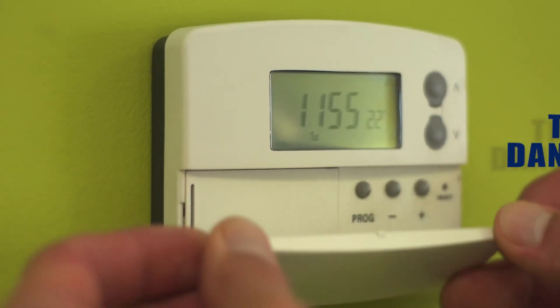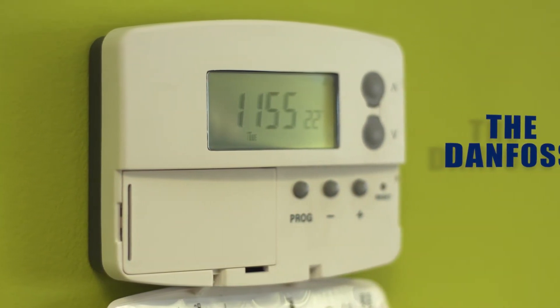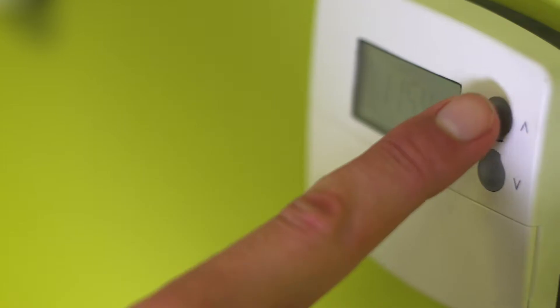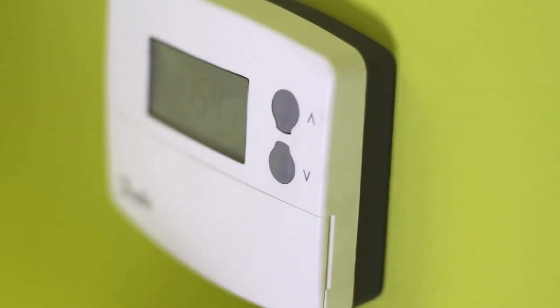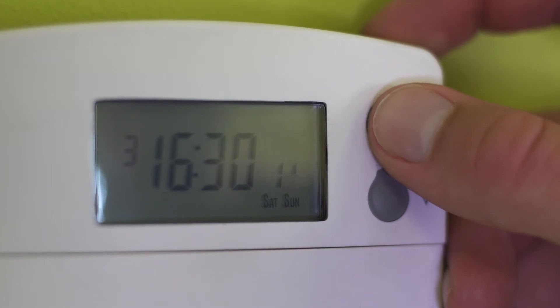The Danfoss is a programmable, timer-based boiler control. The time and date of the Danfoss is automatically set upon installation. Any changes between summer and winter time are handled automatically by the unit.